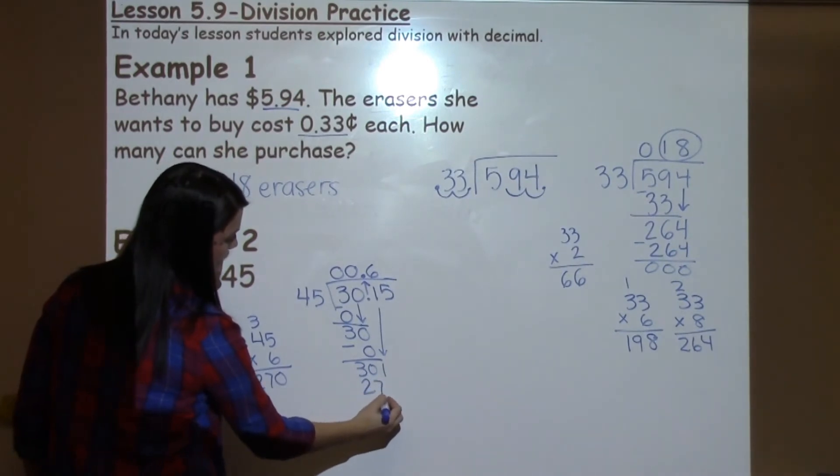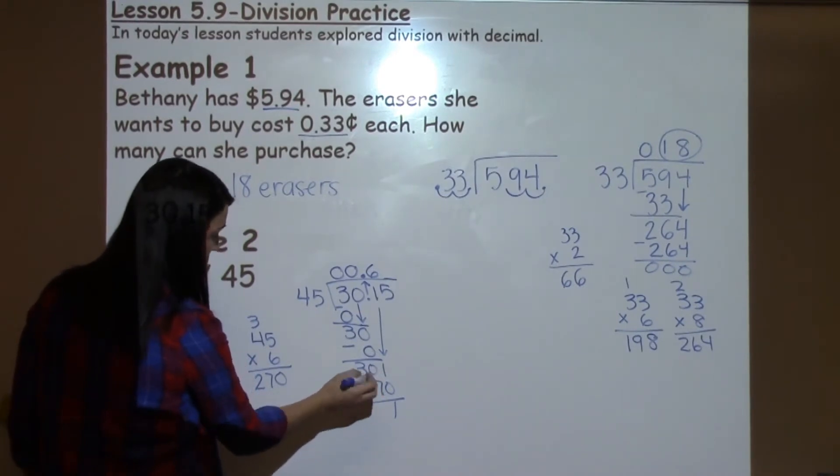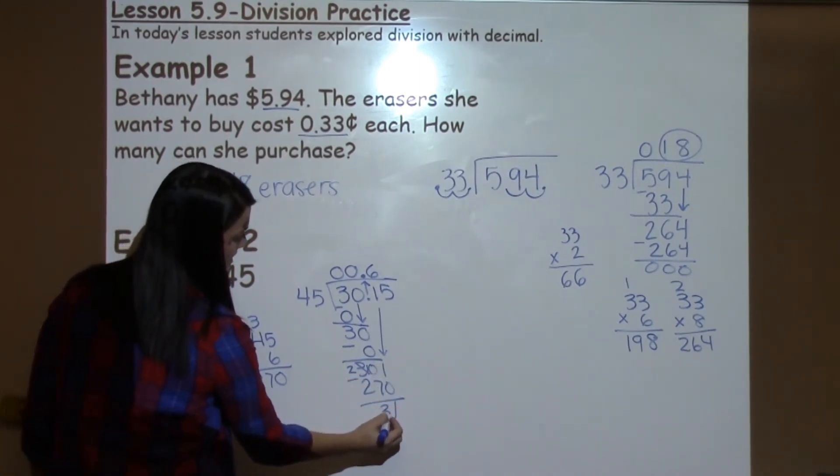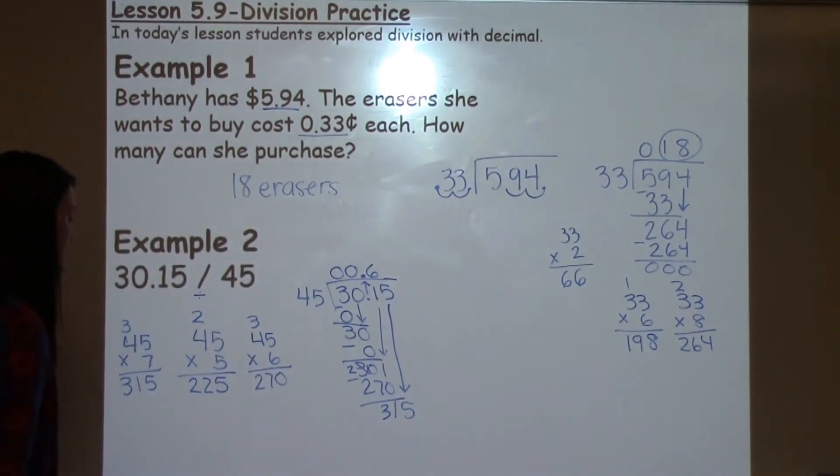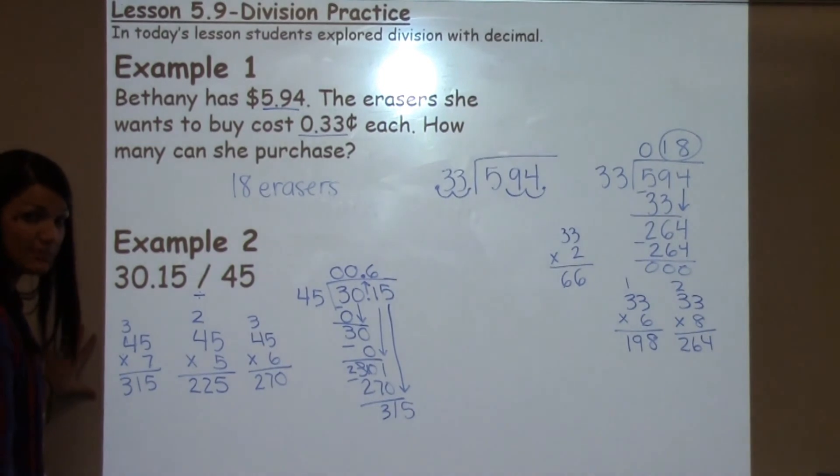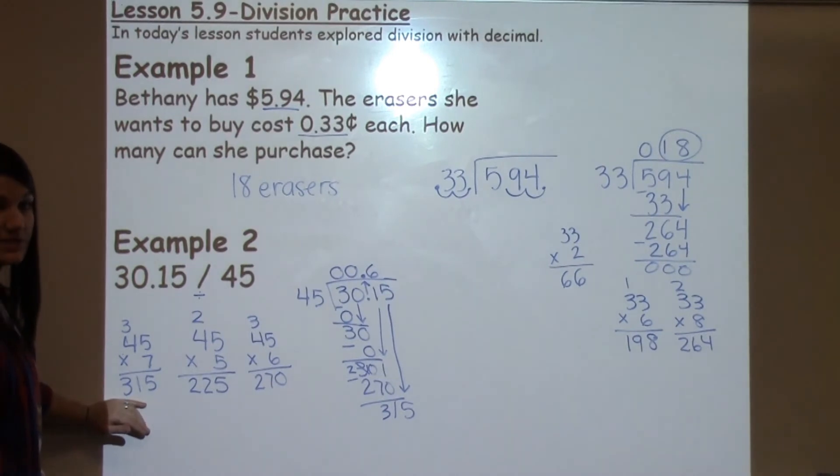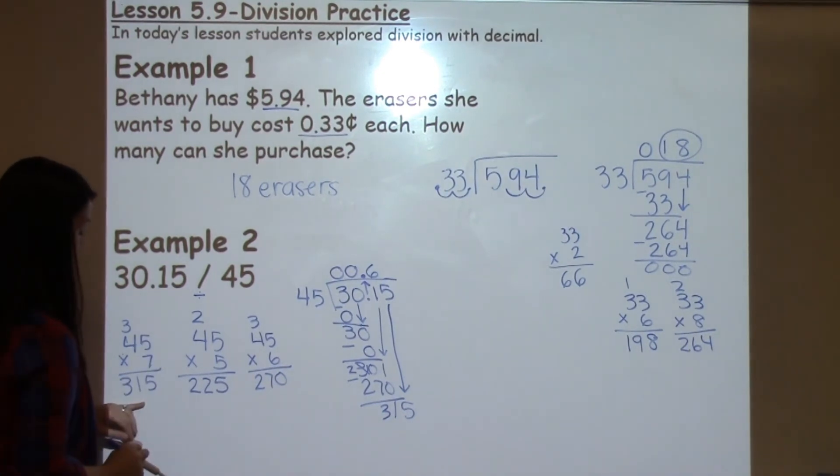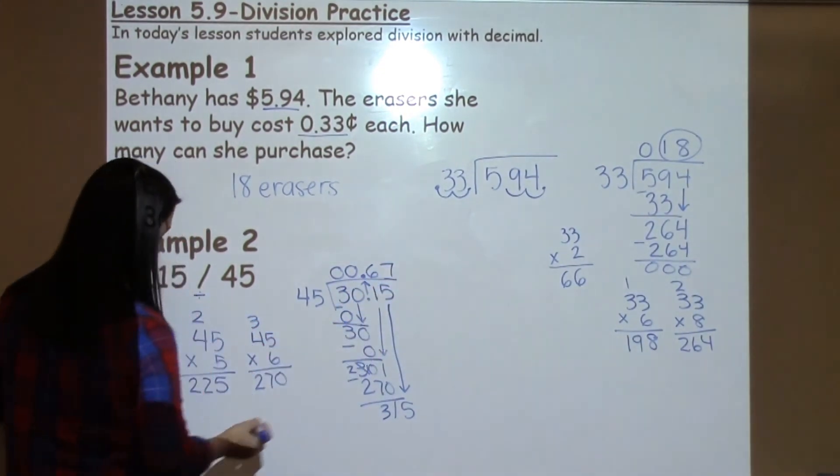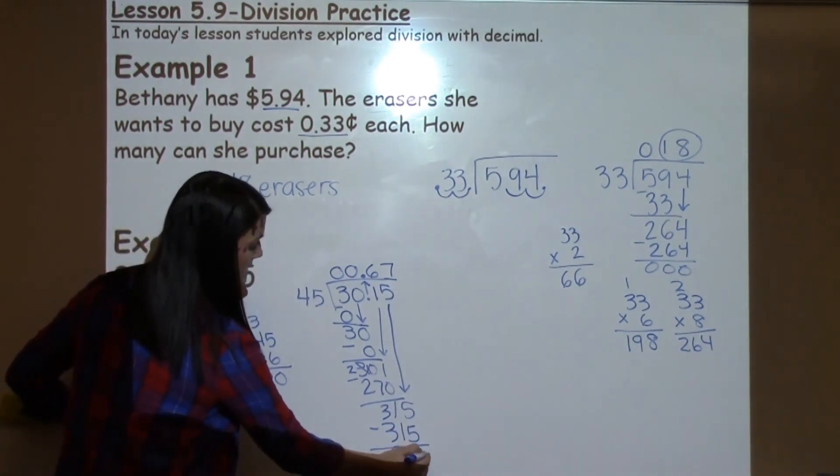6 times 45 gives me 270, and now I'm ready to subtract. 1 minus 0 is 1, 0 minus 7 I cannot do, so I need to borrow from the 3 to make the 0 a 10. 10 minus 7 is 3. So now I have 31 left, but I have to bring down my 5 to continue my process. Now the nice thing about having students keep their guess and check work is because now I can look over here and I found the answer that I need already without having to do any more math. I found that 45 times 7 gives me exactly what I want with 315. So I'm able to put my 7 up top, my 315 down below, and I am finished.